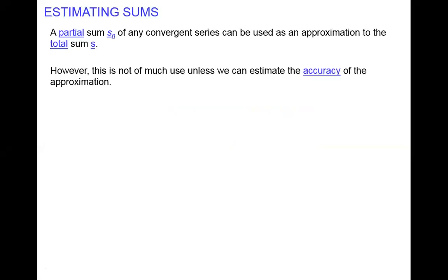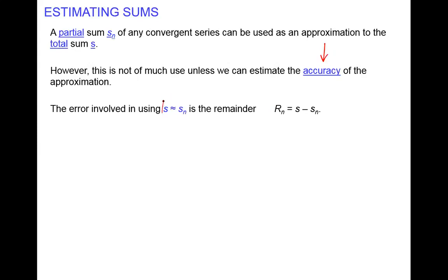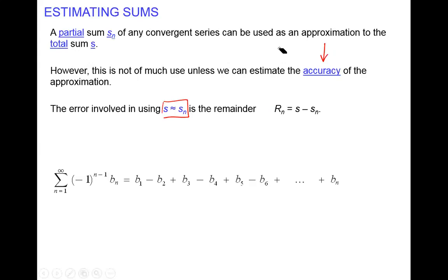However, this approximation is not going to be really helpful unless we find the accuracy of the approximation. That means we need the error involved in using the approximation — that the partial sum S sub n is almost the same as the entire sum. We will have a difference and we will call this the remainder. We do have an alternating series that is of course convergent, because otherwise it's not even logical to talk about the sum if it's divergent.